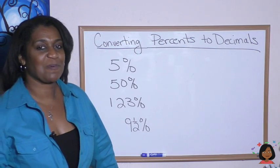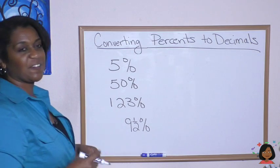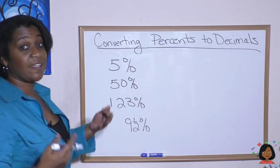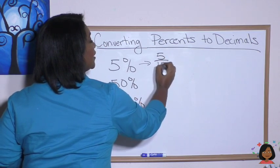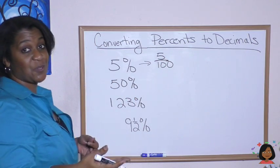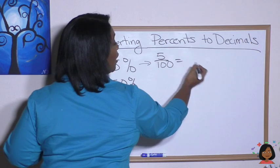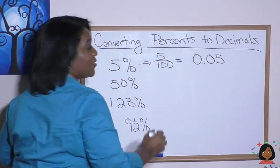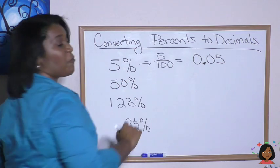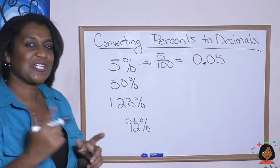Take a look at these examples. Let's start with the first one: 5 percent. It's the same thing as saying 5 over 100. And we want to get to a decimal, which we know is in the hundredths place. So there's our 5 in the hundredths place: 0.05.